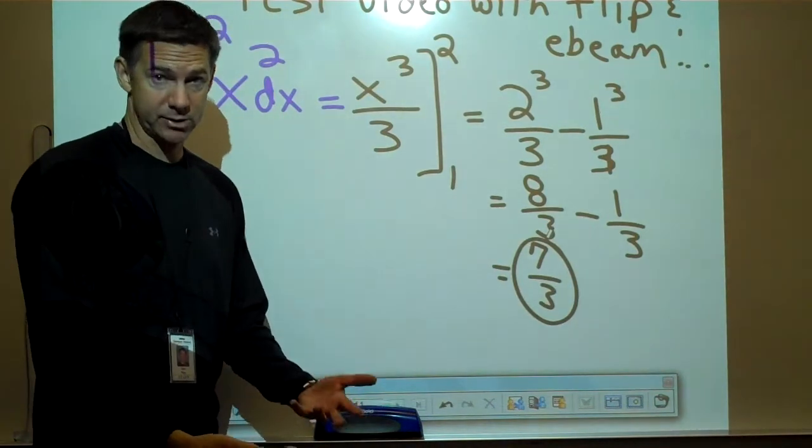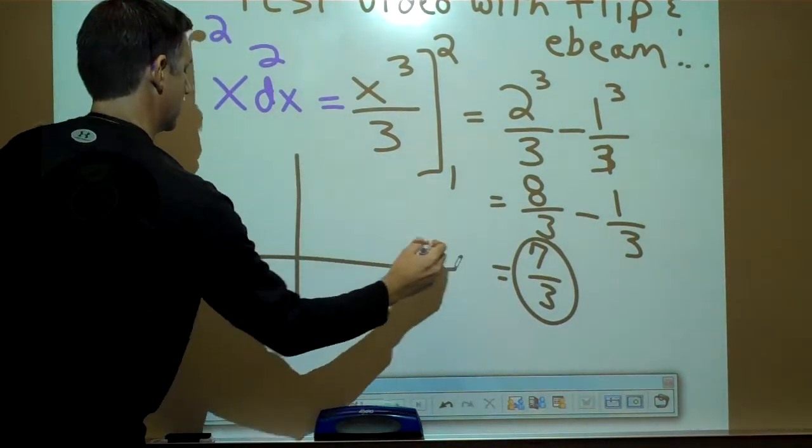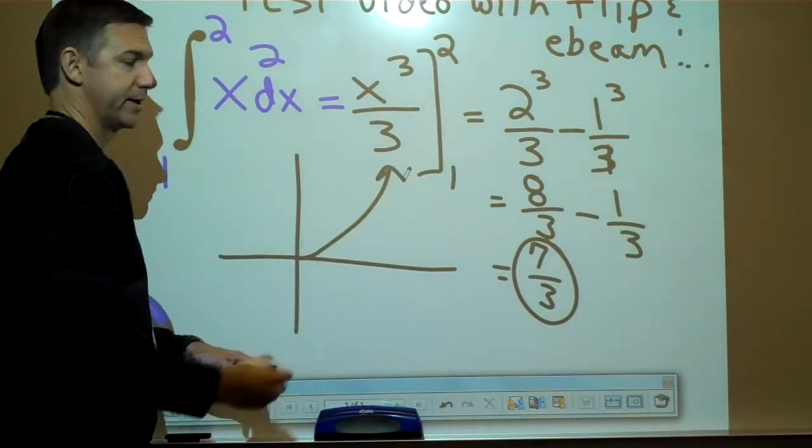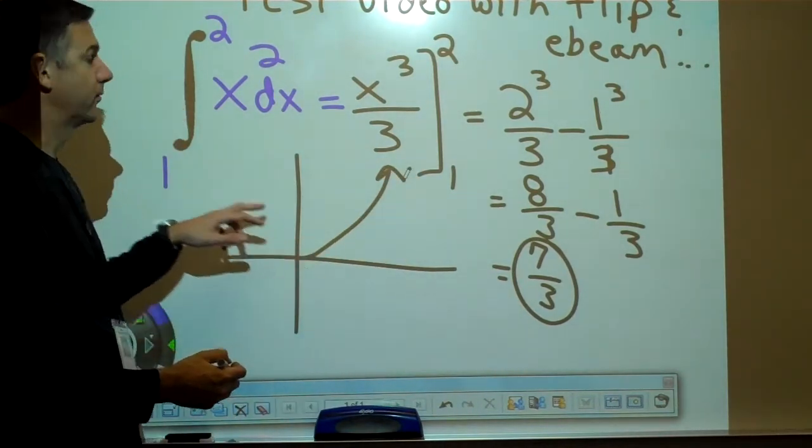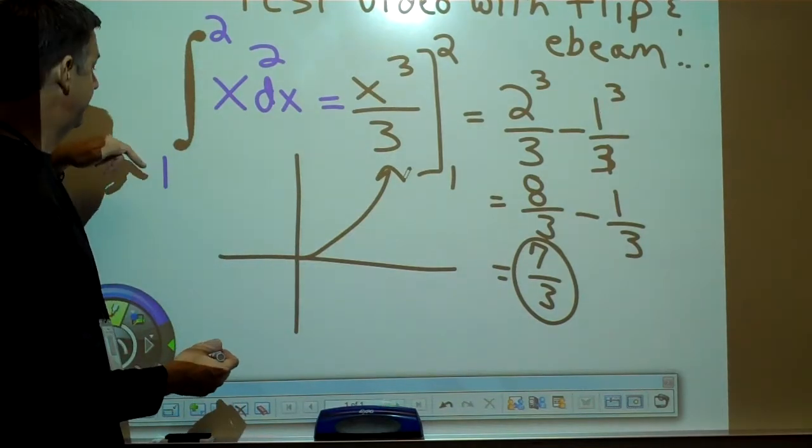Now what is it that we just found? Here's the graph, y equals x squared. What we found was the area under the curve from 1 to 2.